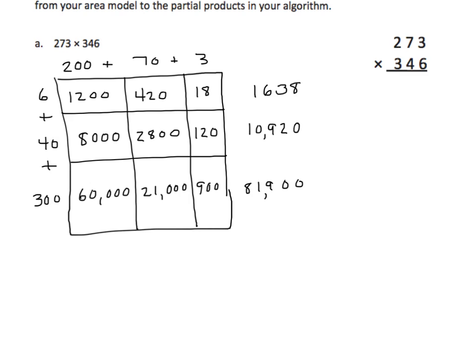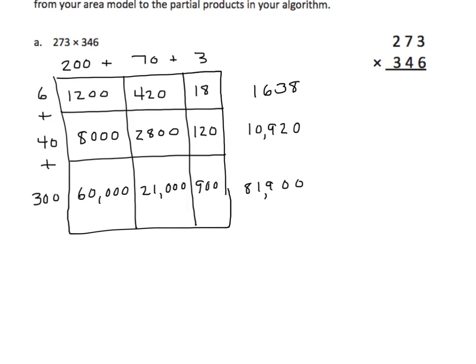I'm going to enlarge this just a little bit. All right. So I'm going to multiply three times six — I get eighteen. Regroup my one right there. Six times seven is forty-two, plus one is forty-three. Regroup my four. Six times two is twelve, plus four is sixteen. We have a match. We're going to now put in a zero, because we're multiplying from the tens place.